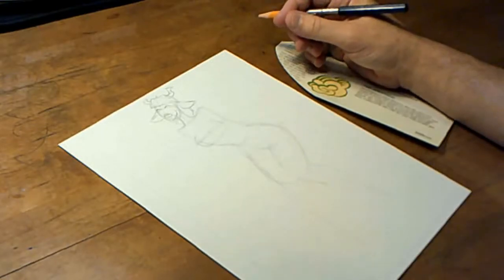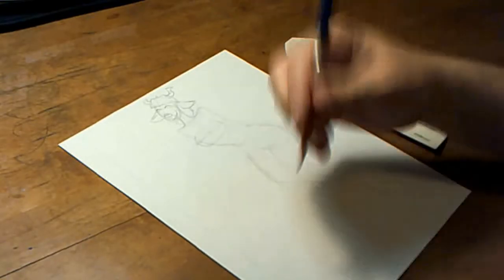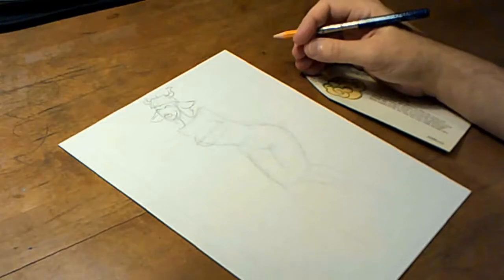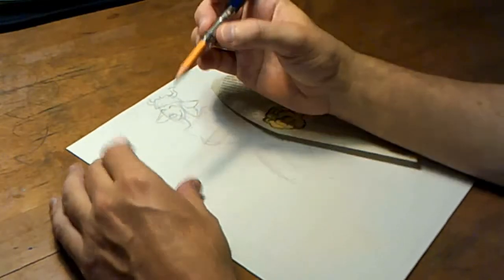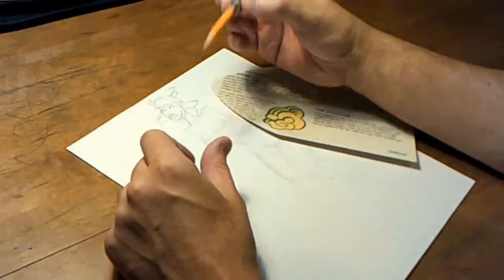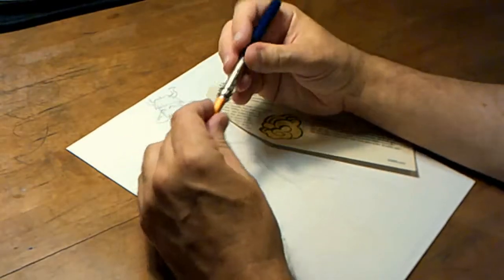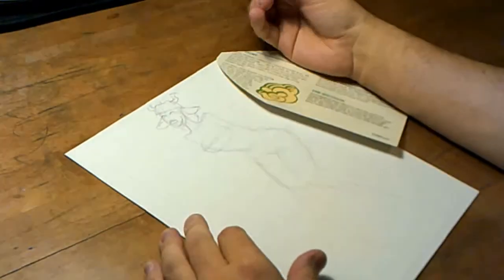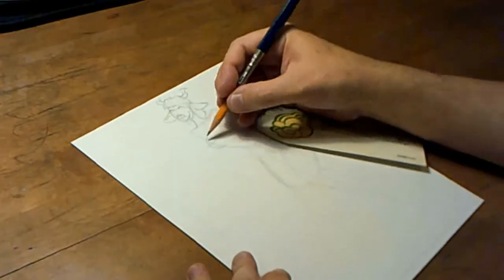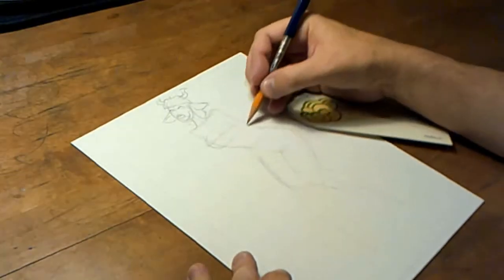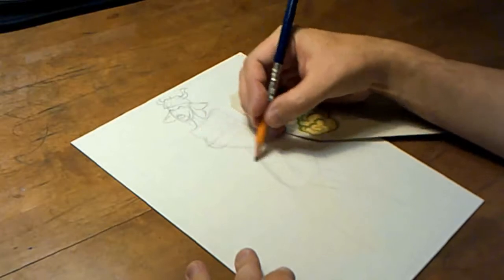And that means that you don't have to erase your pencil. When you use a graphite pencil then you have to erase, and so it really pays to keep your underdrawing light.